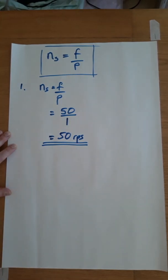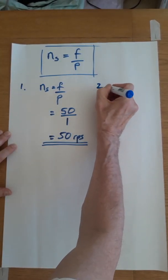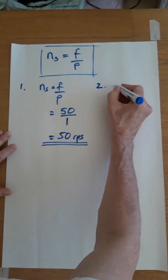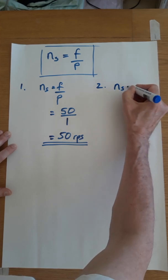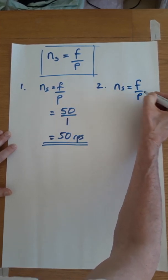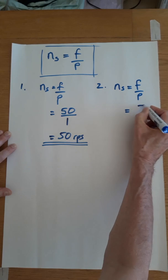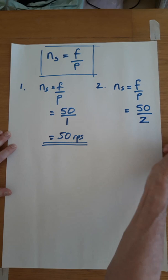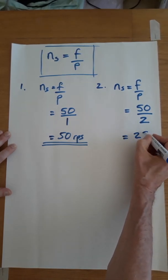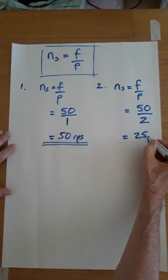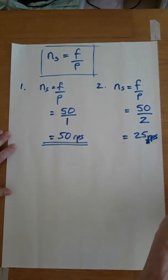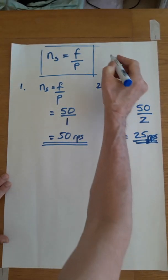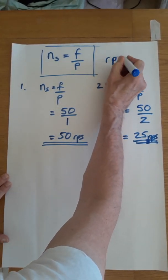Example two: this is a four pole machine on 50 hertz. Synchronous speed ns equals f over p — put the numbers in: the frequency is 50, there are four poles which is two pairs, and that comes to 25 revs per second. So that was all about being in revs per second.